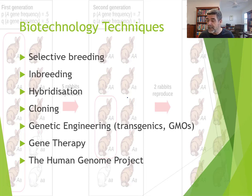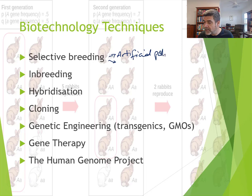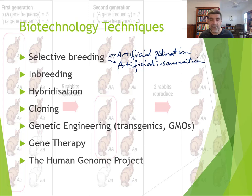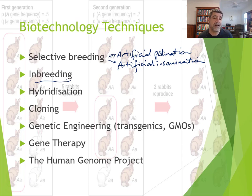I talked about selective breeding. We'll talk a little later on about artificial pollination, which is a technique used for plants, and artificial insemination, which we've used on a number of species of animals. Sometimes inbreeding is something we look at — we know there are potential challenges with inbreeding, but also some advantages in trying to maximise desired qualities. Hybridisation is something more common in plants than in animals.